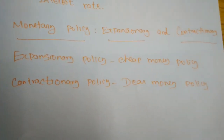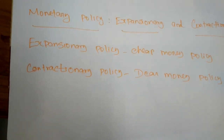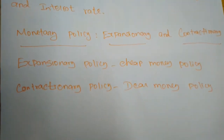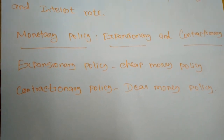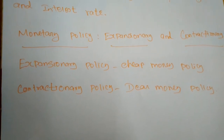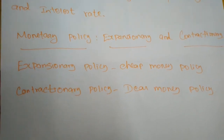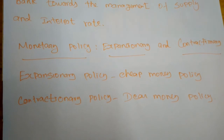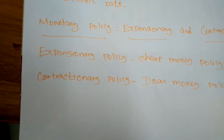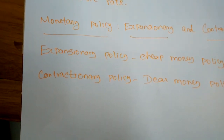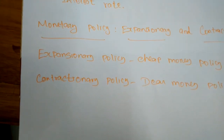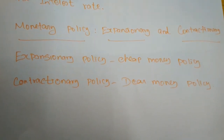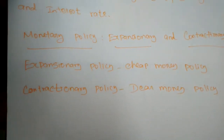Expansionary monetary policy is also called cheap money policy. When a monetary authority uses its tools to stimulate the economy — for example, after a recession period — the Reserve Bank of India takes measures to improve the economy. These are called expansionary or cheap money policies. An expansionary policy maintains short-term interest rates at a lower than usual rate to increase the total supply of money in the economy.